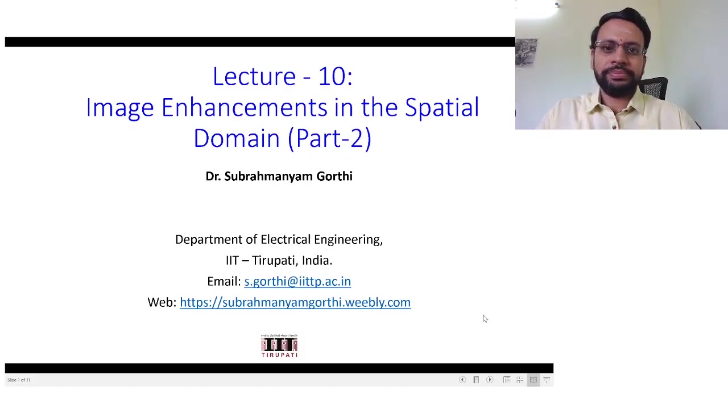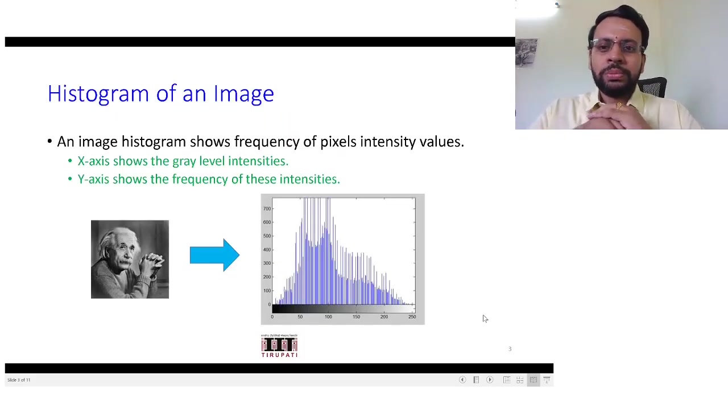I'm sure you all know by this time what a histogram means. We could say it as a progress report of the intensities present in a given image. More formally, you could think of it as an abstract representation of intensities present in a given image. For example, take the image that is there on the left hand side.